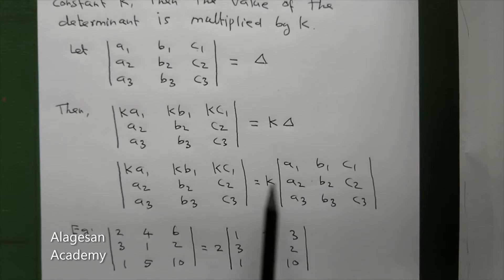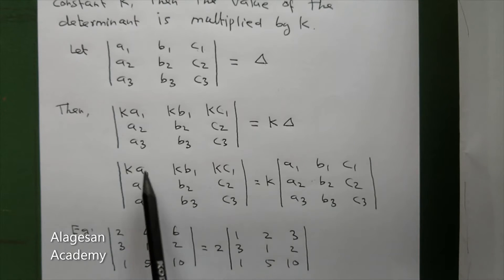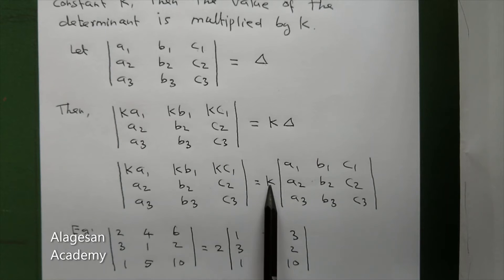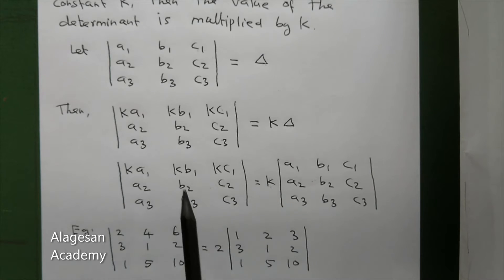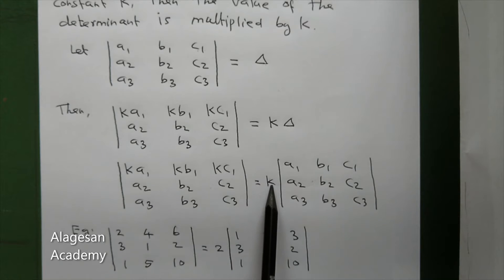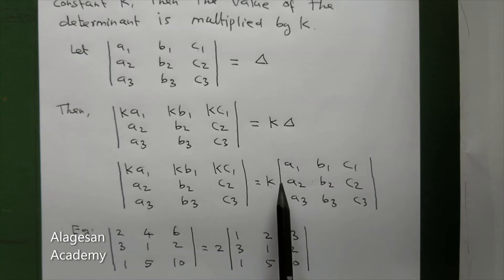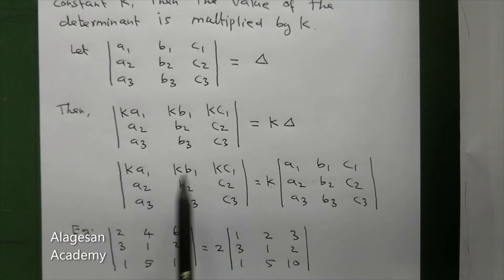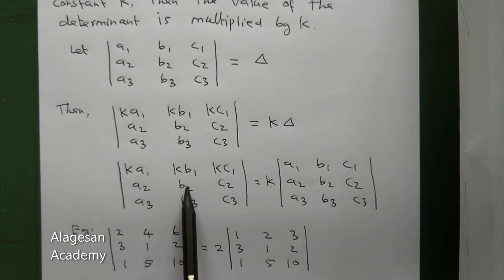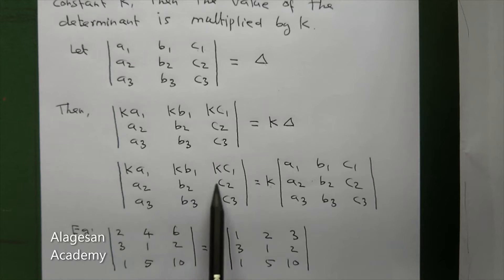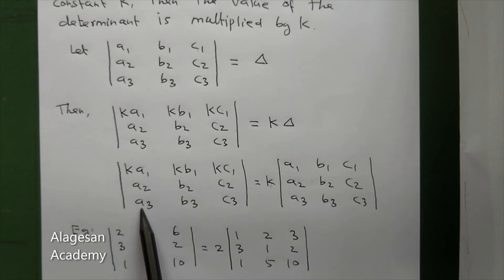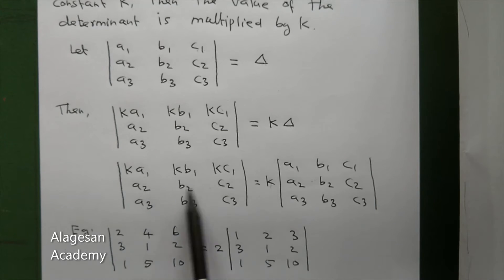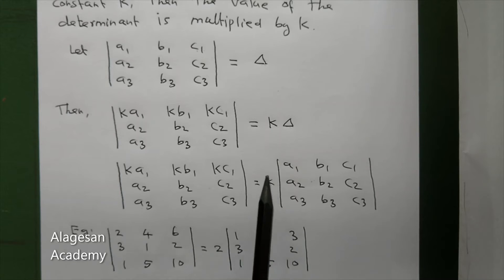Comparing the left side and right side, what changes is only the first row — the first row has k as a common factor. We can take k out from the determinant. So the determinant equals k times the original determinant.